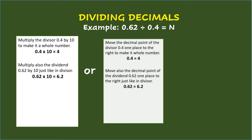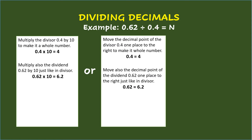Or, you can just move the decimal point of the divisor 0.4 one place to the right to make it a whole number. So, 0.4 will become 4. Then move also the decimal point of the dividend 0.62 one place to the right, just like what you did with the divisor. So, 0.62 will become 6.2.